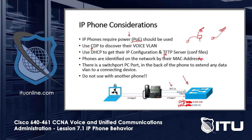Phones are identified on the network by their MAC address. There is a switch port — a PC port — in the back of the phone to extend the data VLAN to a connecting device. However, do not cascade this to another phone. You wouldn't have power for the other phone, and it's simply not designed to work that way — so stay away from it.